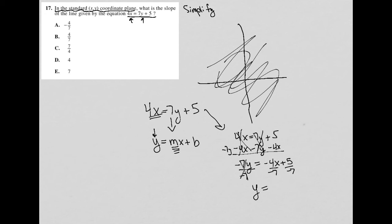negative 4 divided by negative 7 is positive 4/7ths X and then minus 5/7ths. But none of that matters because all I really care about here is my slope or this M value.